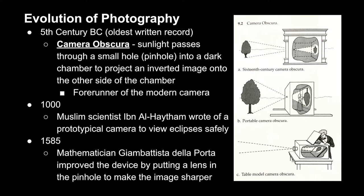The camera obscura is a dark chamber with a hole in one wall where sunlight can pass through, and it actually projects an inverted image on the other side of the chamber. The hole where the sunlight comes through is so small that it's sometimes called a pinhole camera, and this device is the forerunner of the modern camera.